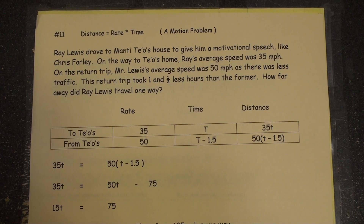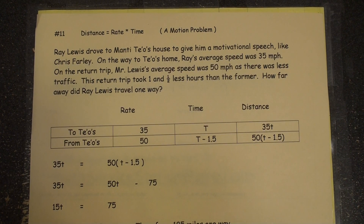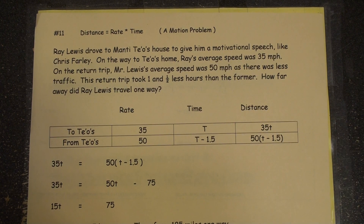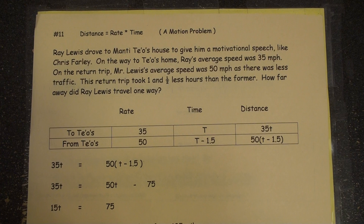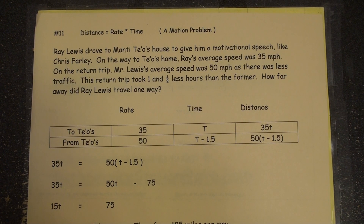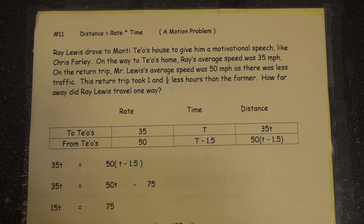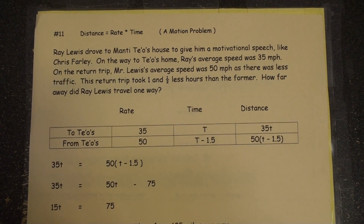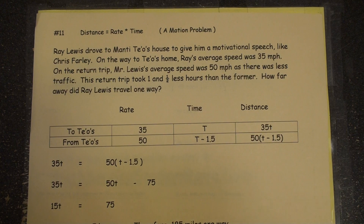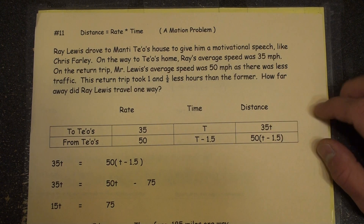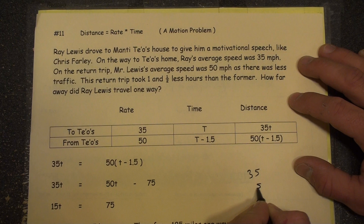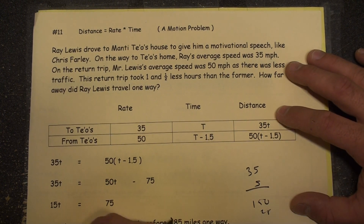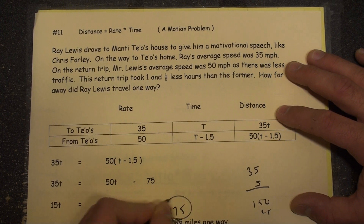Therefore, 175 miles one way. I took the 5 and plugged it right into T: 35 times T. Wait, is that 175? Yes, I think it's 175 — let's make that correction. I'm always good for one mistake per video. 35 times 5: the old school way, that's 150 plus 25. Yeah, that's 175. Nice. I'm always good for at least one mistake.